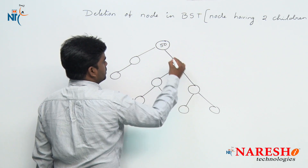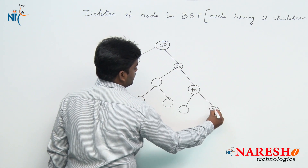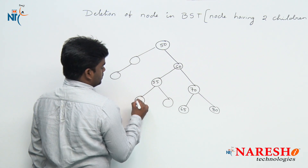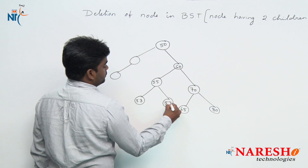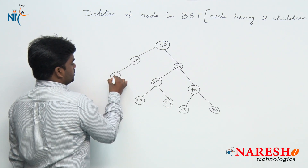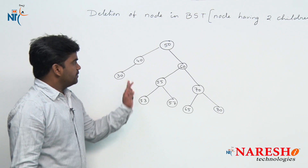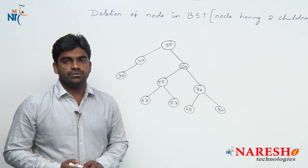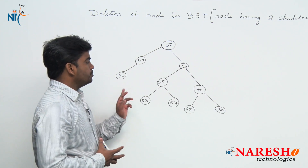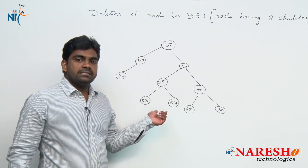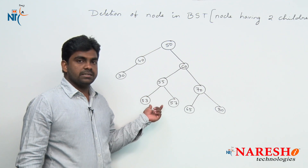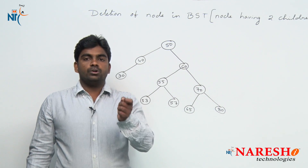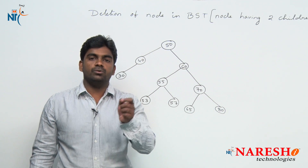Suppose we have nodes: 50, 60, 70, 80, 65, 55, 53, 57, 40, 30. I have inserted some of the nodes by following the rules of a binary search tree. Whenever we are inserting the elements, greater values move to the right side and lesser values move to the left side.